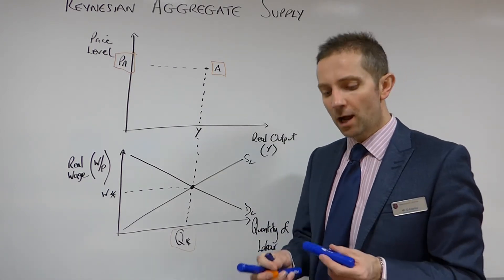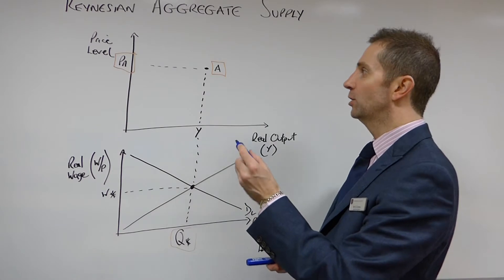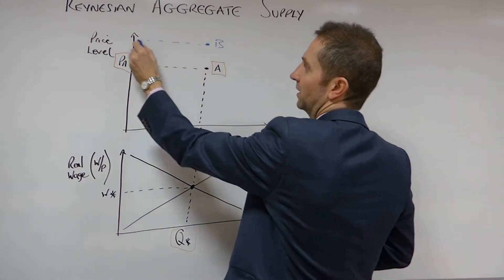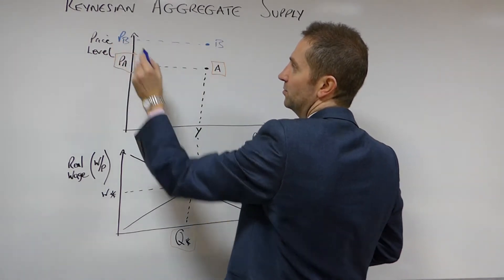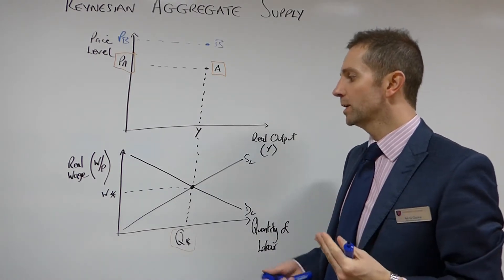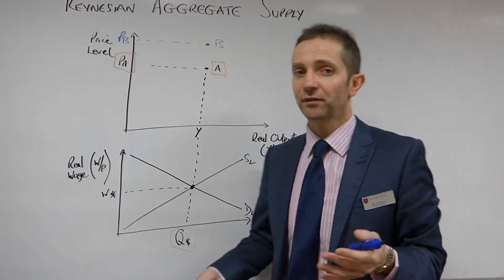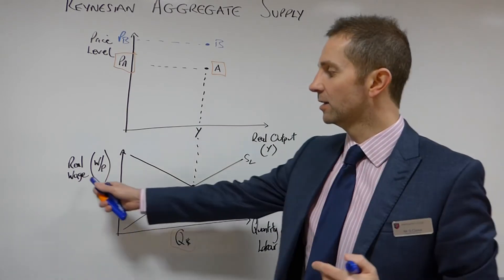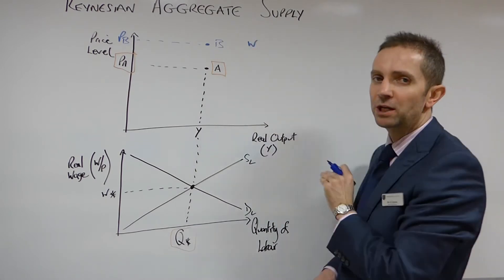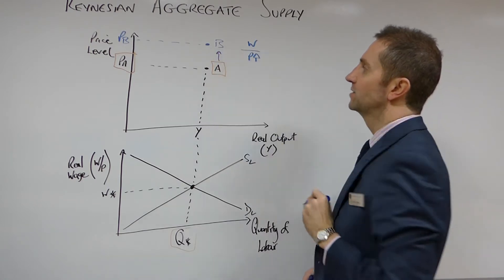So what will happen then in the Keynesian aggregate supply scenario whenever there is an increase in the price level. So price level rises from A to B. We can take our price line here across to B. Now once again, it's very important that we consider what is going on in the labour market whenever we have an increase in the price level, but more specifically what is happening to the real wage W over P. So we've got a fixed money wage and the price level here has just gone up, it's gone up from A to B.